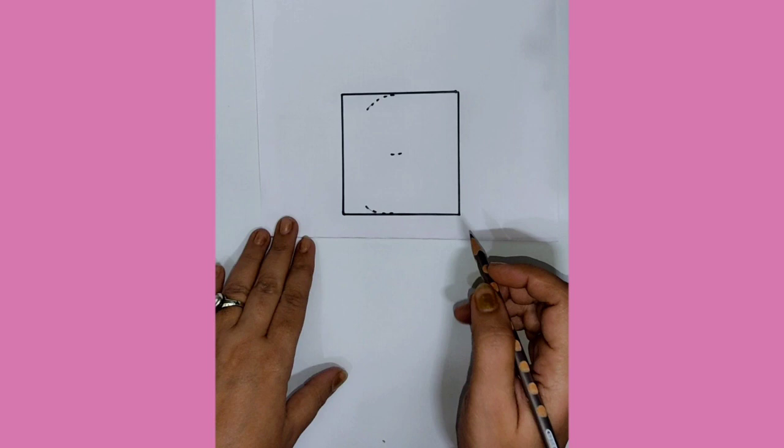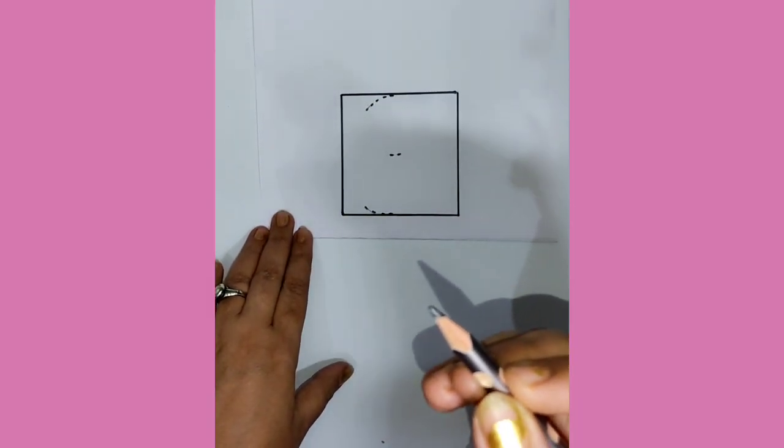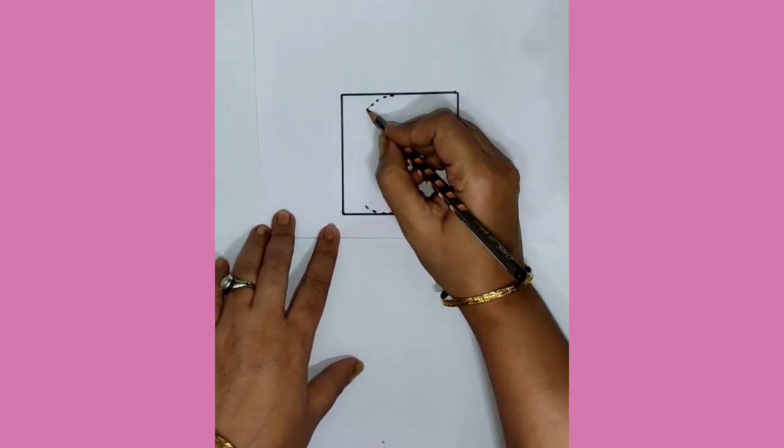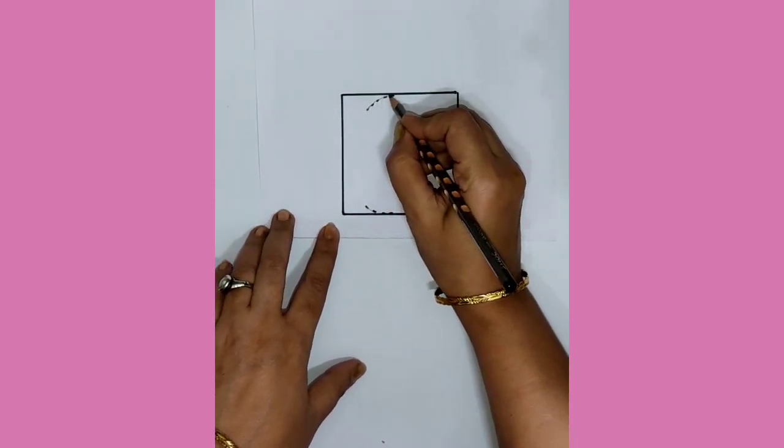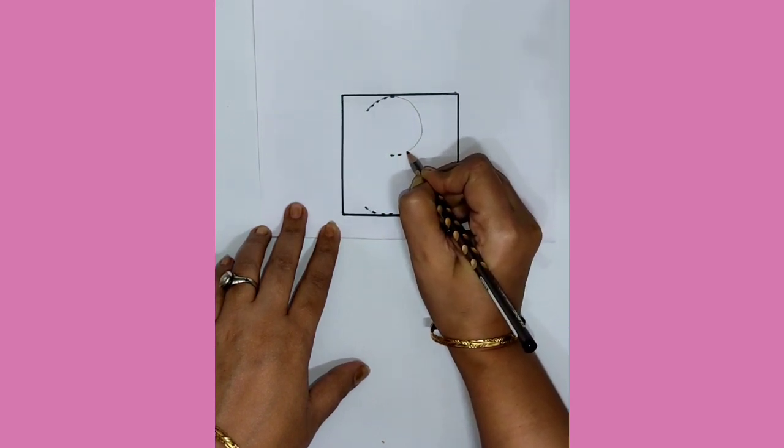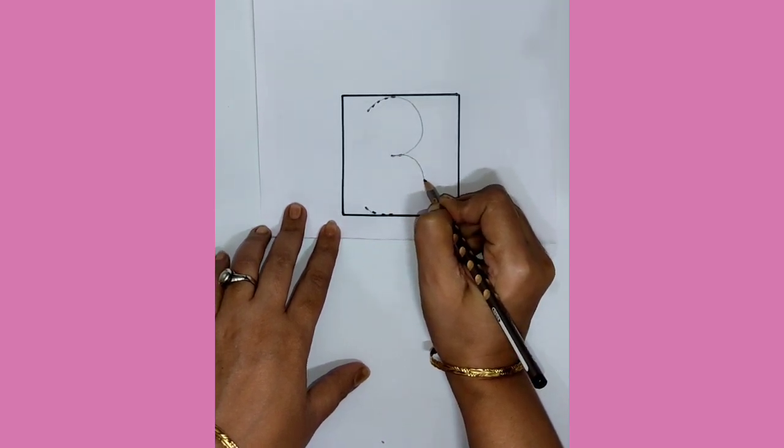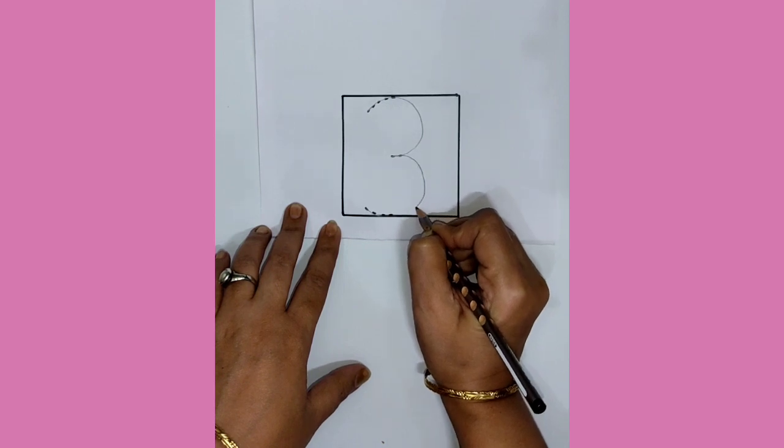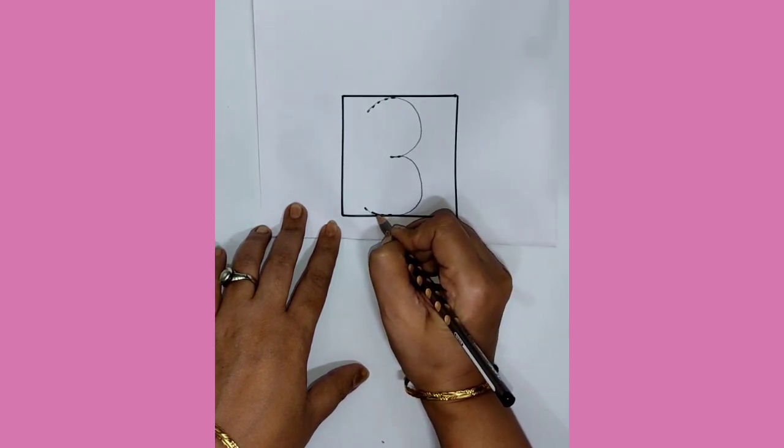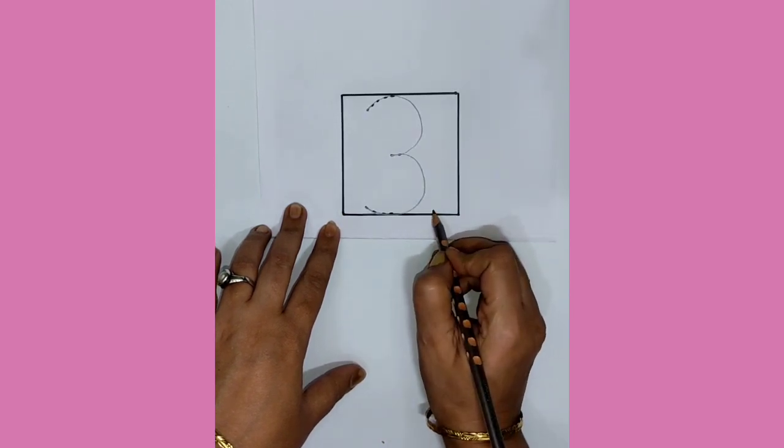Dear children, now see how to trace number 3 on less dots. First, hold the pencil tightly. Now, make a half a round, then again make a half a round. Very good. Tell me, which number is this?